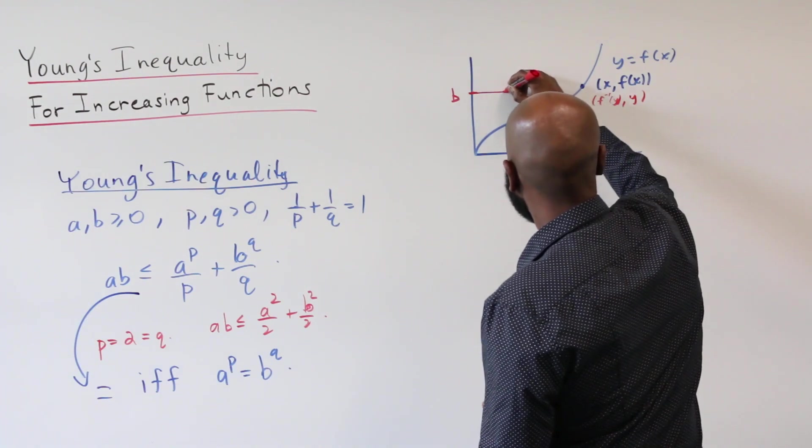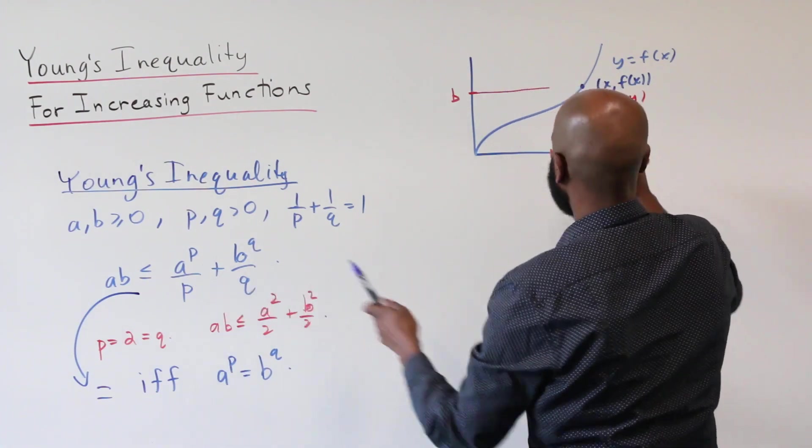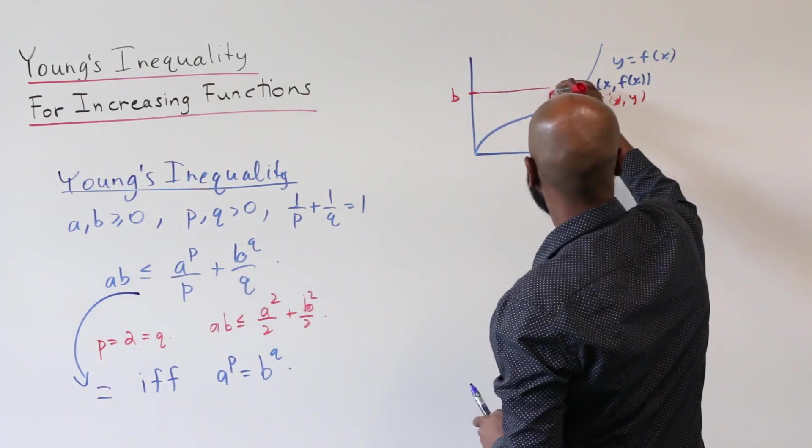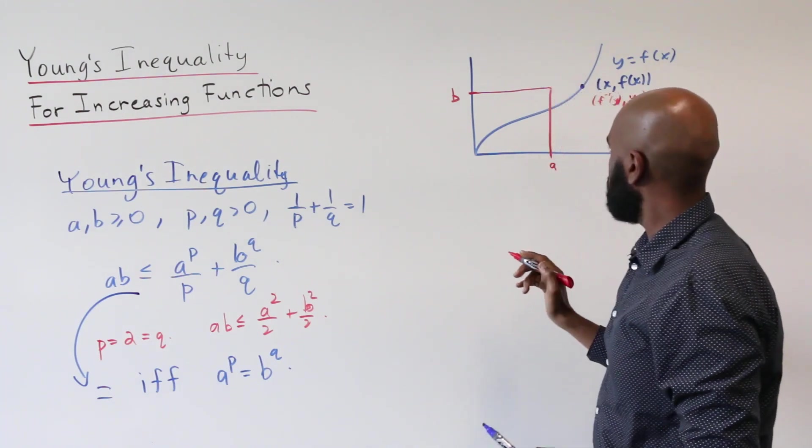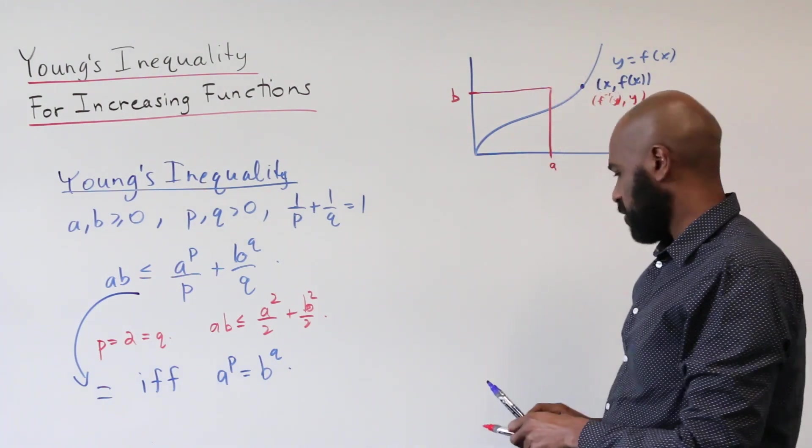So AB, which is the part involved over here, is the product of A and B, which is the area of this rectangle right here.